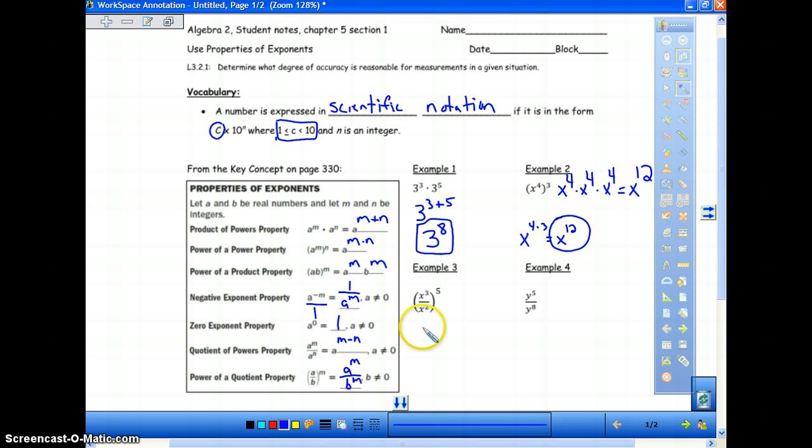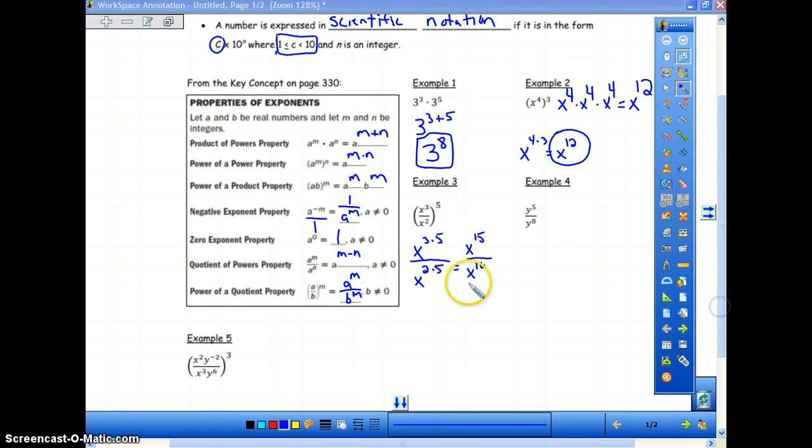In example 3, we have a couple of properties in motion here. And it actually doesn't matter which order you do this in. We can either apply the power on the outside to the inside first, or we can do our quotient property first and then apply the power. I'm going to go ahead and apply the power first to the inside. So it will look something like this, x to the 3rd times 5, and then x squared times 5. That will equal x to the 15th divided by x to the 10th. And now we use our quotient property to say x to the 15th minus 10, which will be x to the 5th.